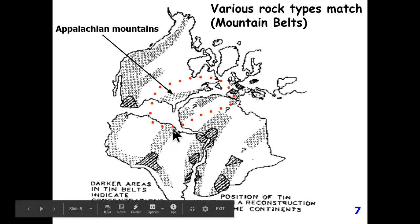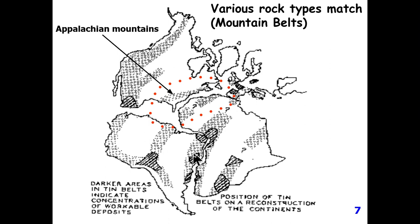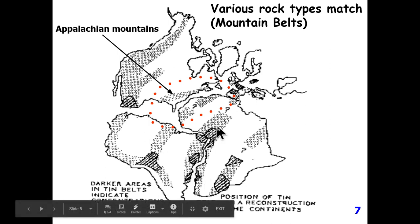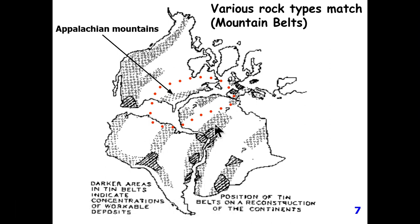Not only that, but you have correlations of rock groups as well. You can take the Appalachian Mountains in the eastern United States, and it correlates very nicely with mountains in the Morocco area of Africa. So now Alfred Wegener has fossil evidence and lithologic rock evidence.